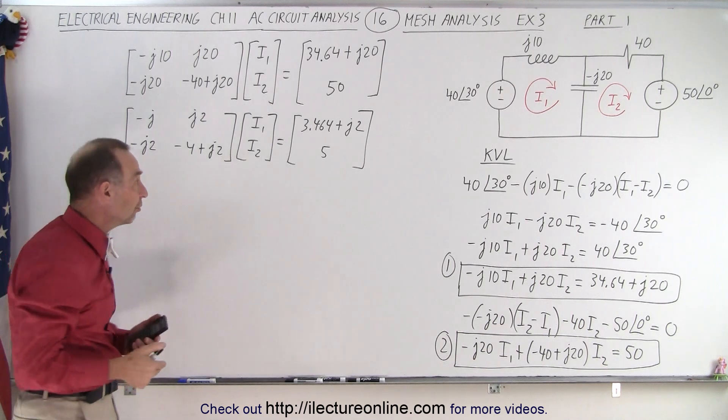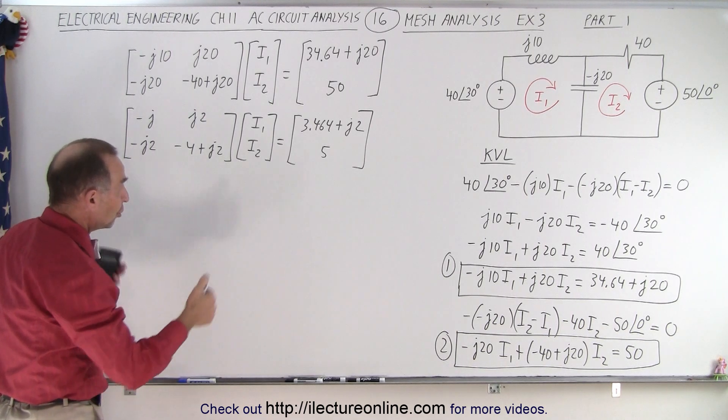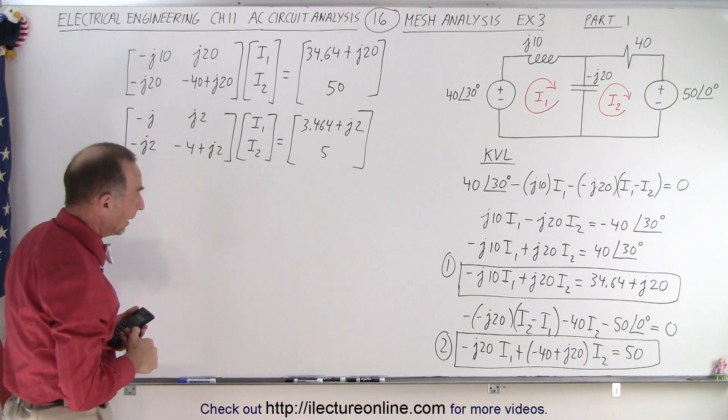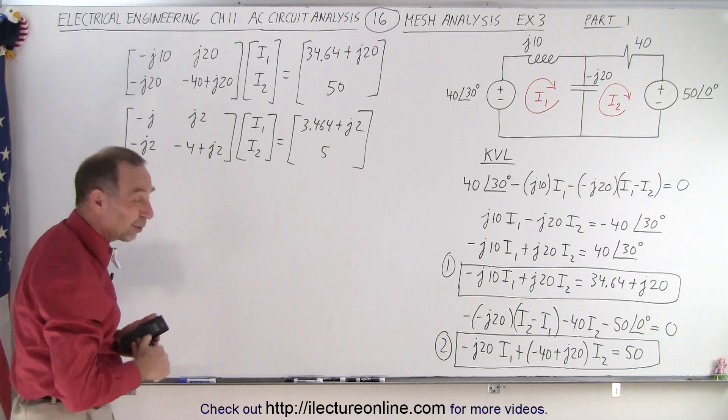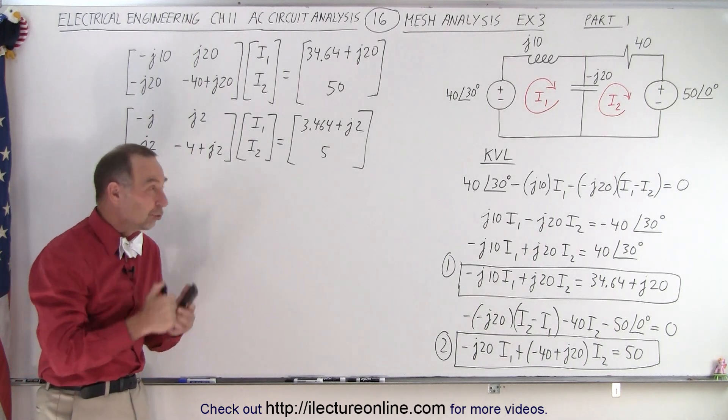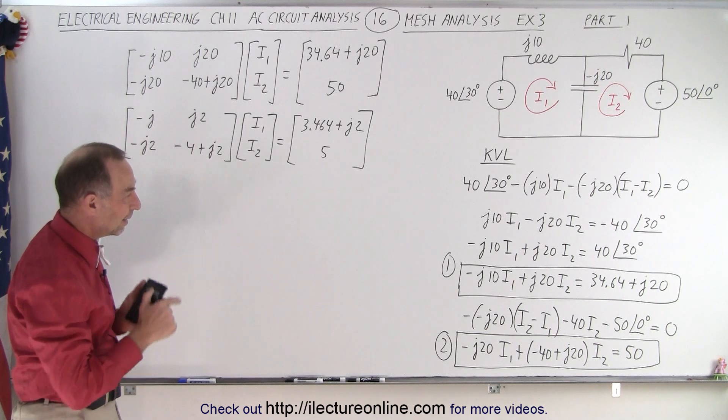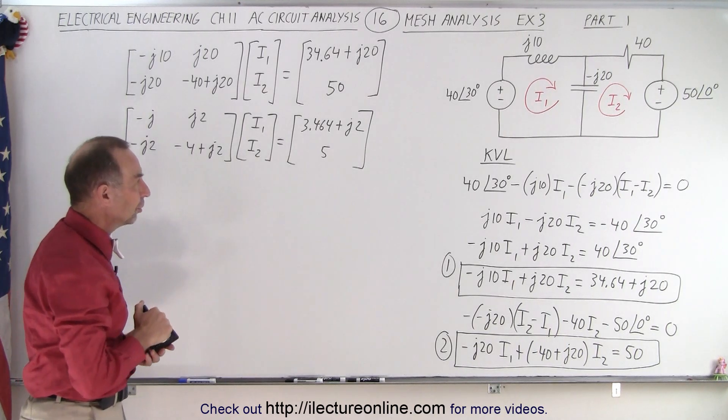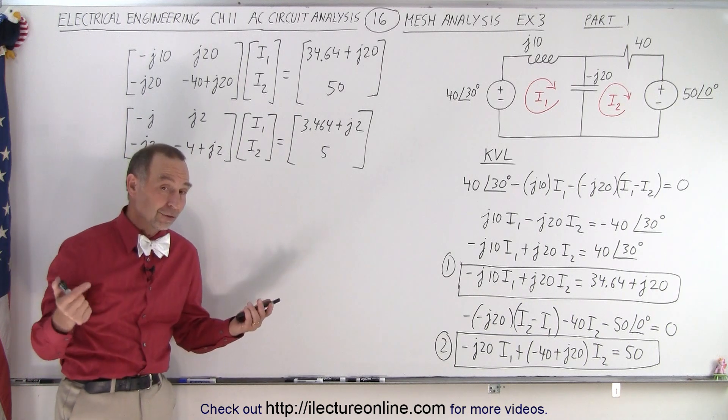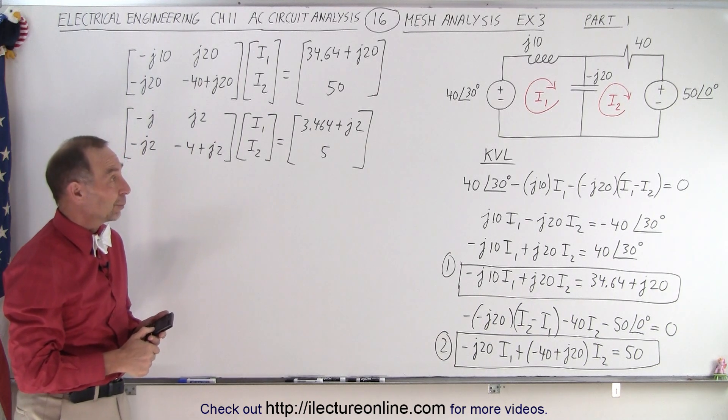So now what we need to do is find the determinant, find D1 and D2, and then we can solve for I1 and I2. Because I'm starting to run out of room here, so we don't get too squeezed. Let's go ahead and make that part 2. And in part 2 we'll solve the determinant using the method of determinants. And that's how we'll find I1 and I2.